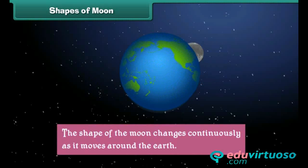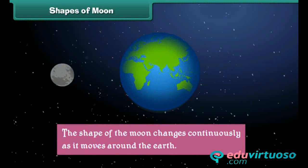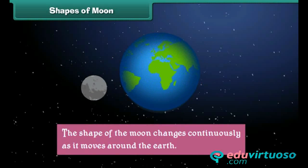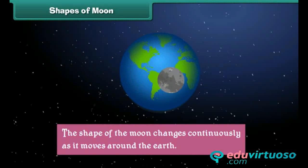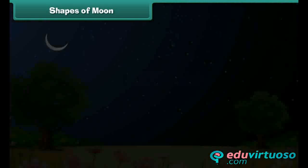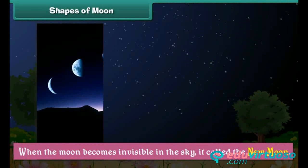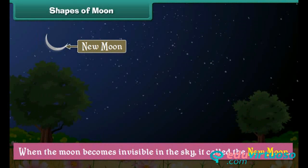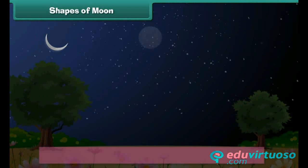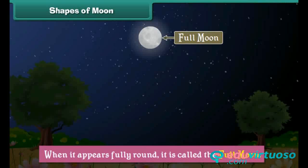The shape of the moon changes continuously as it moves around the earth. When the moon becomes invisible in the sky, it is called the new moon. When it appears fully round, it is called the full moon.